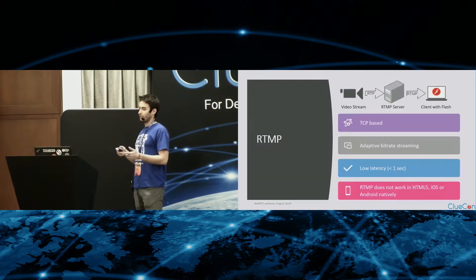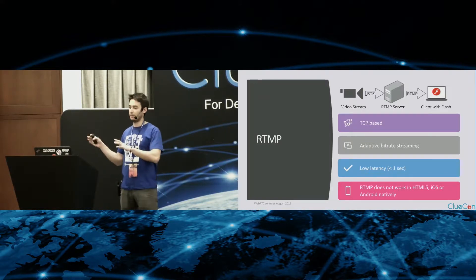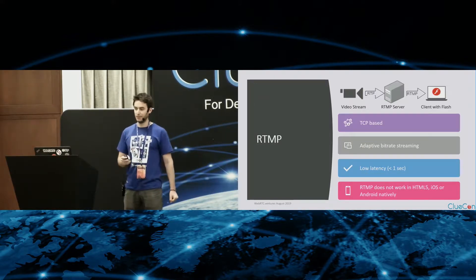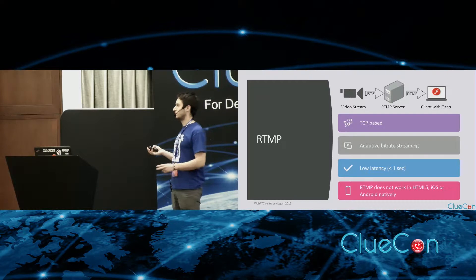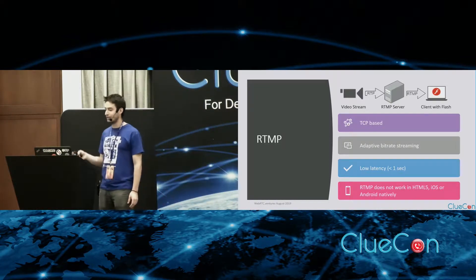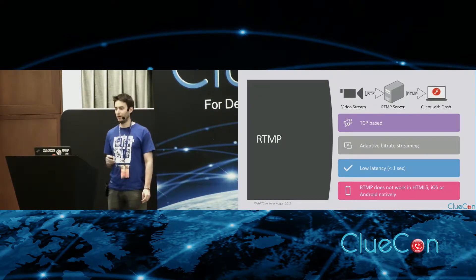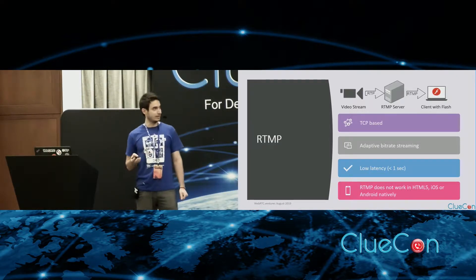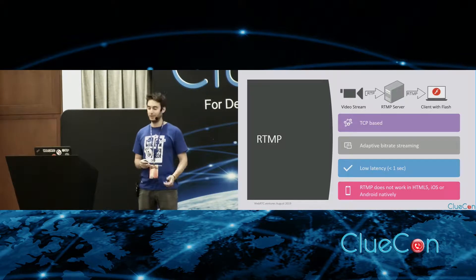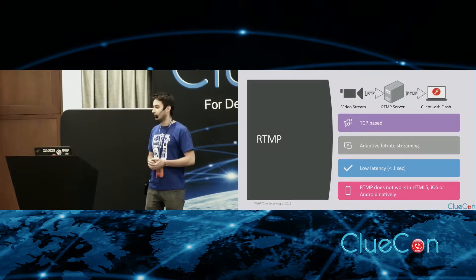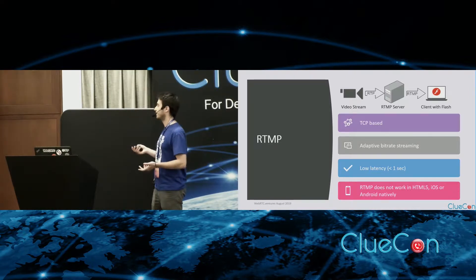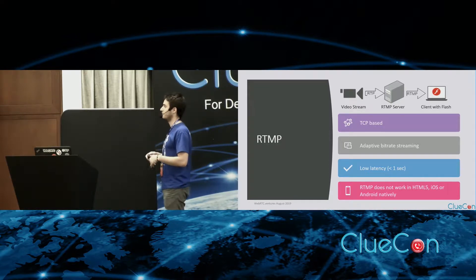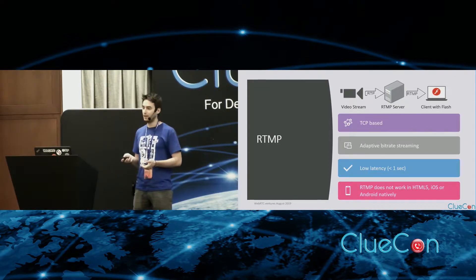Going briefly over each protocol: RTMP has been out there for a longer time. It's TCP-based, so you have error correction — not as quick — but it has adaptive bit rate for streaming, which is great. It has low latency, usually under one second. The problem is that you can't use it out of the box on the browser, iOS, or Android.